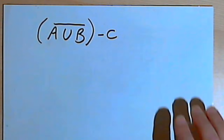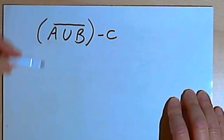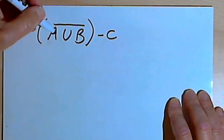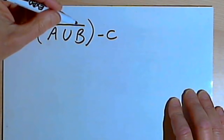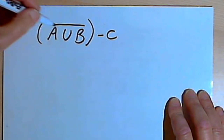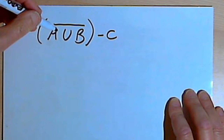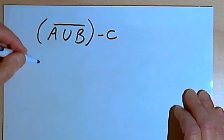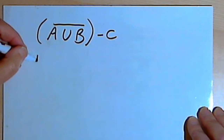This next one is going to involve the complement. Here I've got a union of A and B, but I'm taking the complement of that union of A and B. And then from that I'm taking away anything that's in set C.